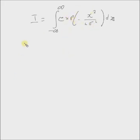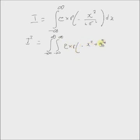Now we define the function I square, which can be expressed as a double integral from minus infinity to plus infinity, exponential minus x square plus y square by 2 sigma square dx dy.